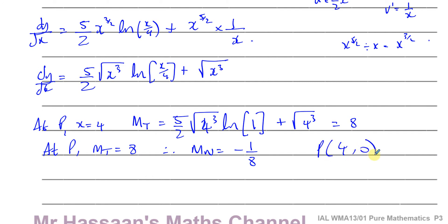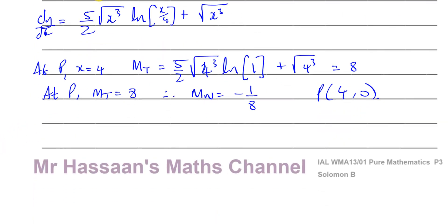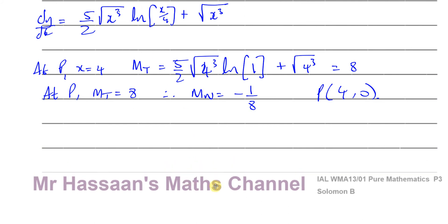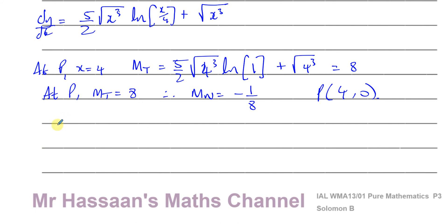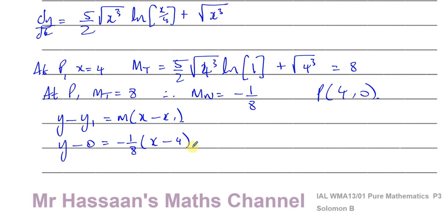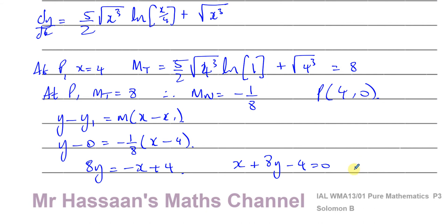With point P = (4, 0) and gradient of the normal = -1/8, using y minus y₁ = m(x minus x₁): y minus 0 equals minus one over eight times (x minus 4). Multiplying by 8: 8y equals minus x plus 4, so x plus 8y minus 4 equals zero. That's the equation of the normal to the curve at P.